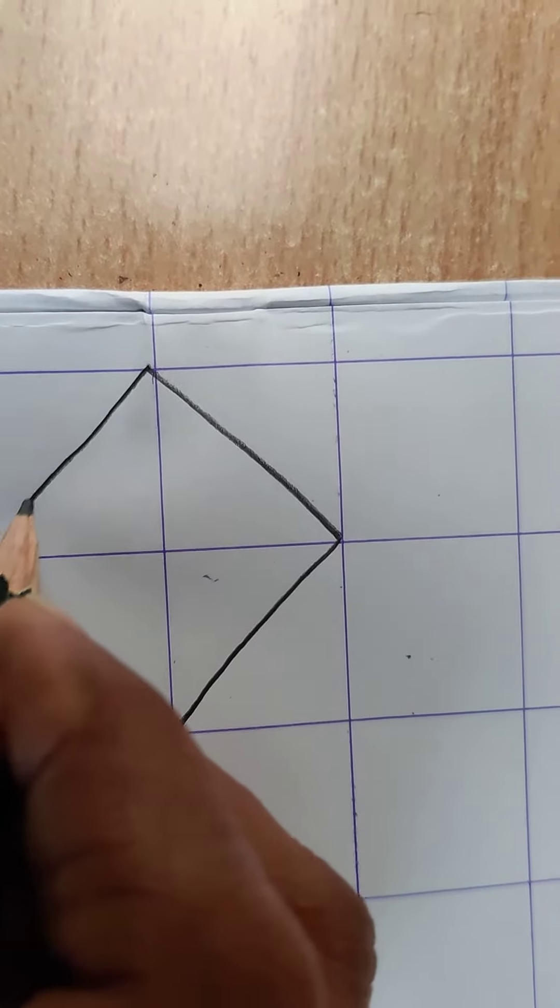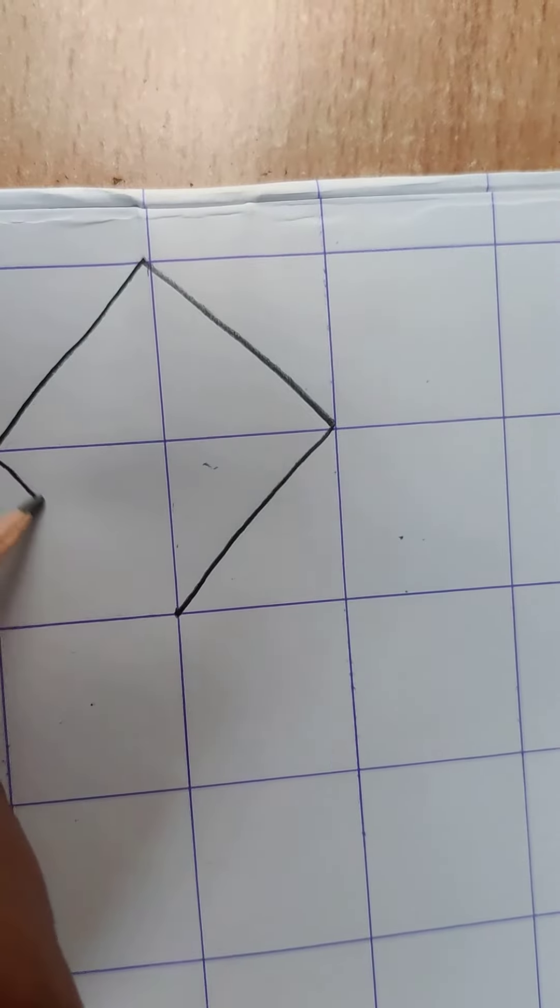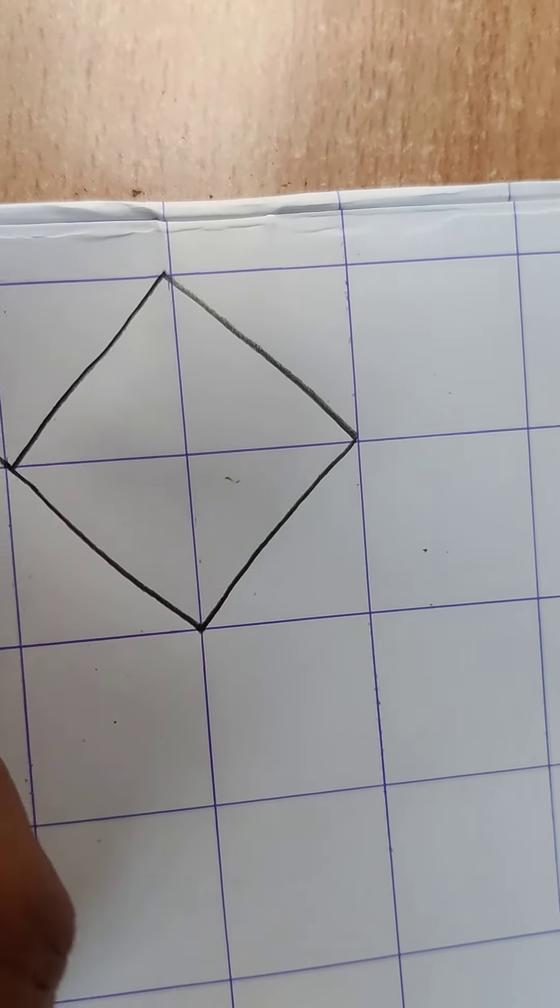So you have to make only two lines of kites in one page. Okay.